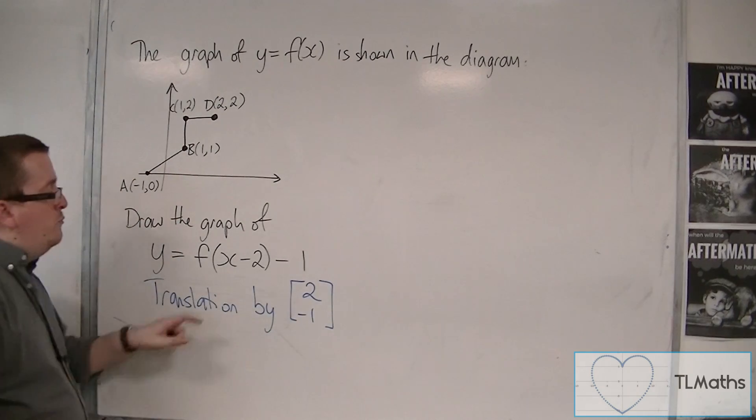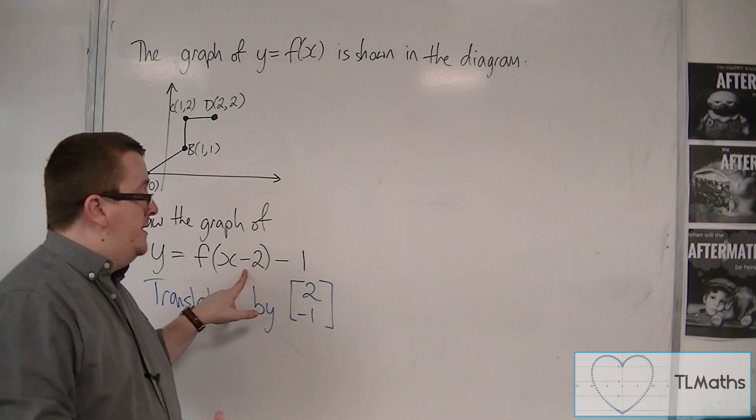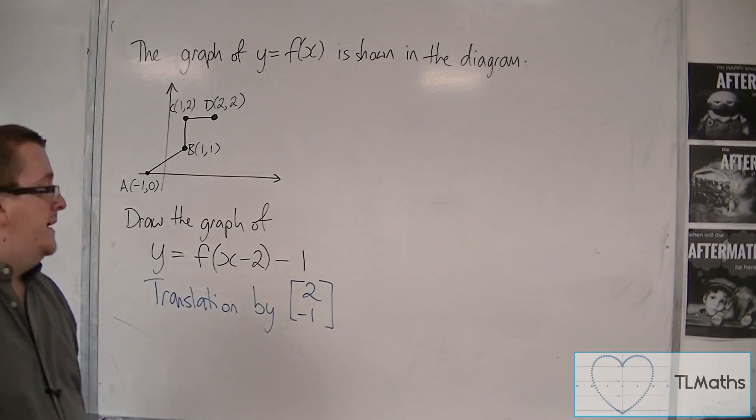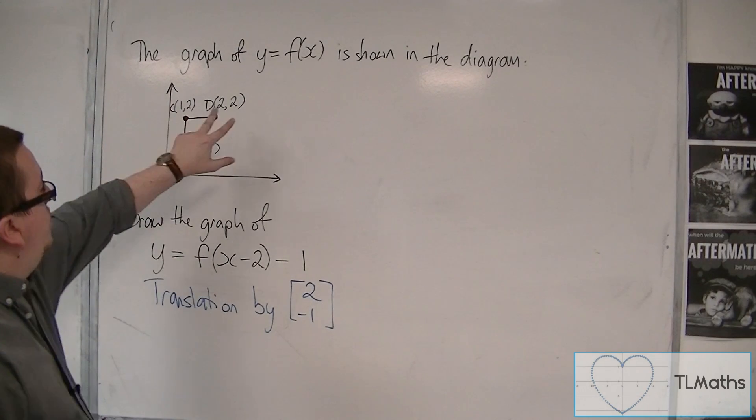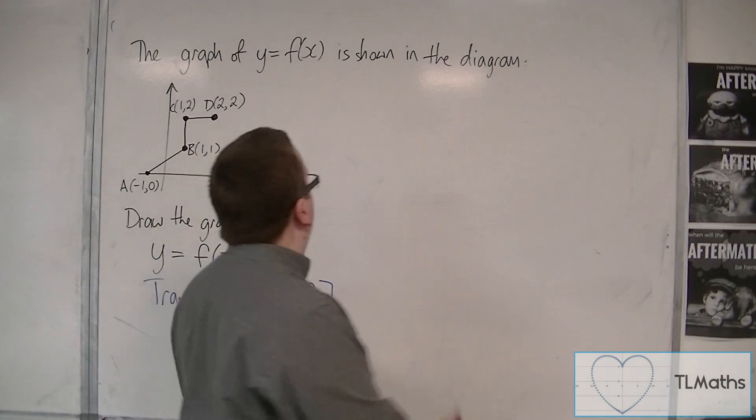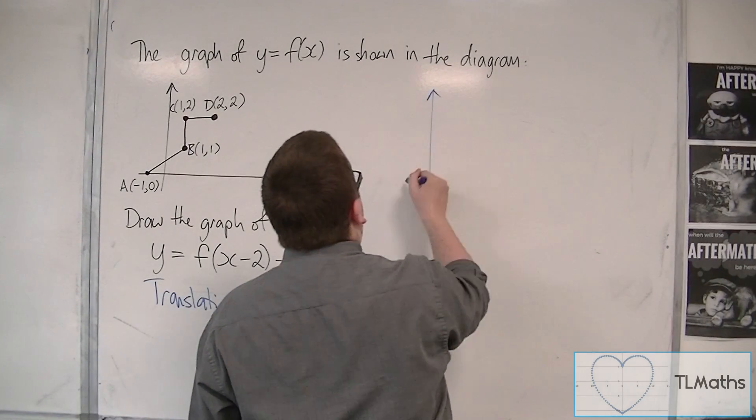OK, so the number inside the bracket changes sign. The number outside the bracket stays the same. So this shape has been translated 2 along and 1 down. So I need to redraw this shape.